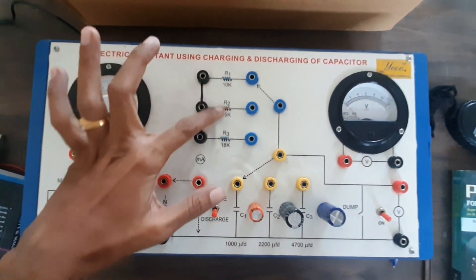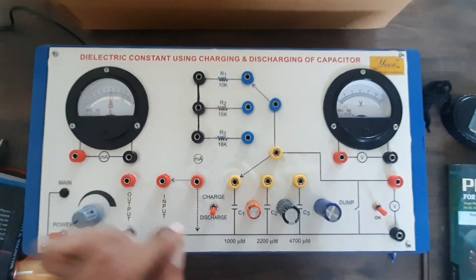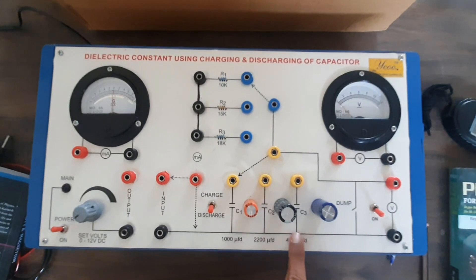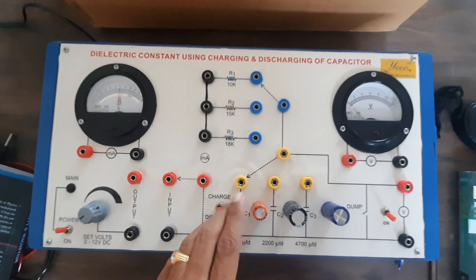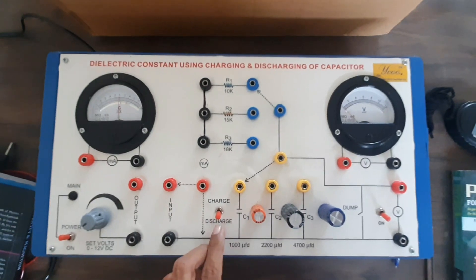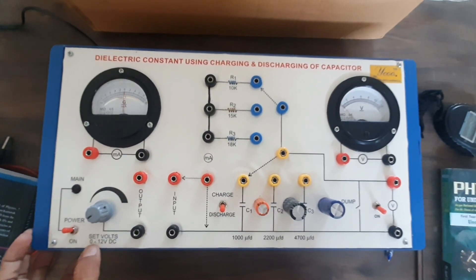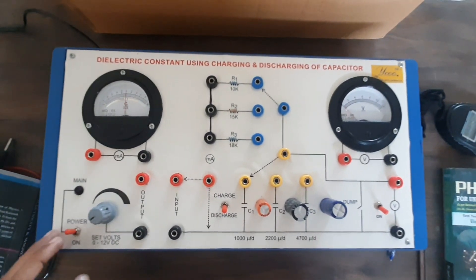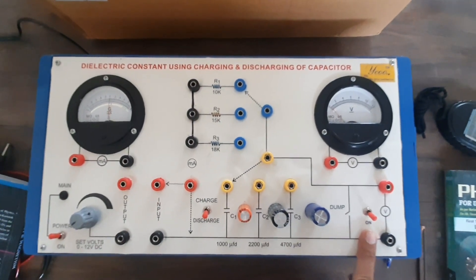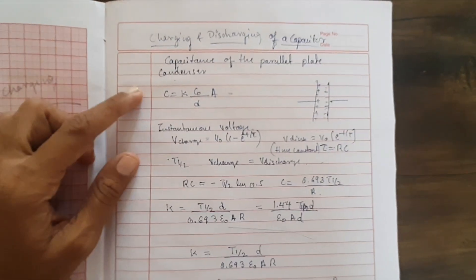Here we have resistances of different values — three resistors are given, you can use any one among them. And here three capacitors are given, so you can use any one of them. Here is the switch used to take readings for charging and discharging mode, and here is the knob to set the voltage from 0 to 12 volts input voltage. This is the power on/off button, and here is the switch used to start the device in charging or discharging mode.